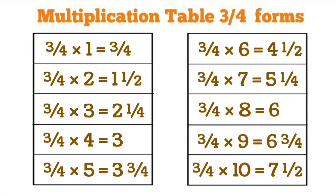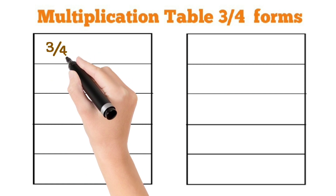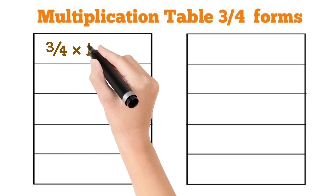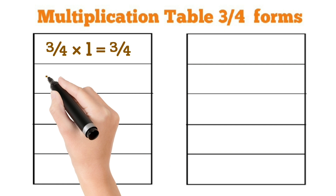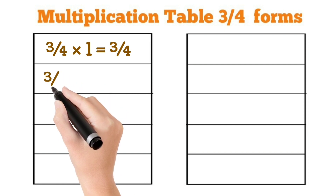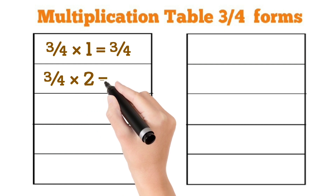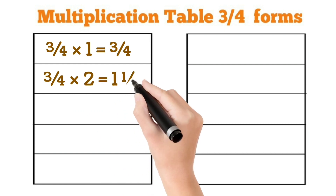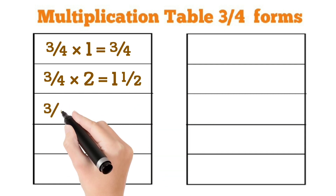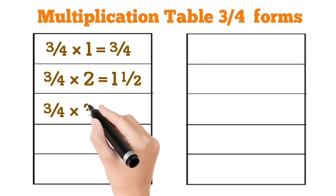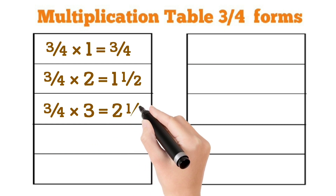Multiplication table 3 by 4 forms. 3 by 4 multiplied by 1 is equal to 3 by 4. 3 by 4 multiplied by 2 is equal to 1 and 1 by 2. 3 by 4 multiplied by 3 is equal to 2 and 1 by 4.